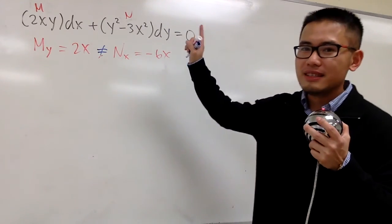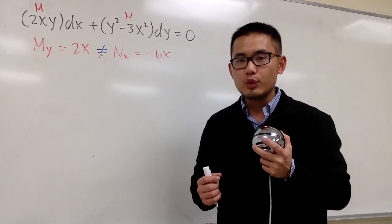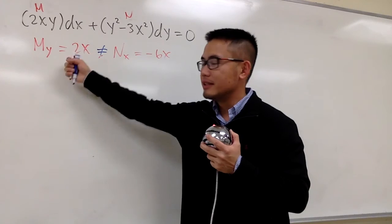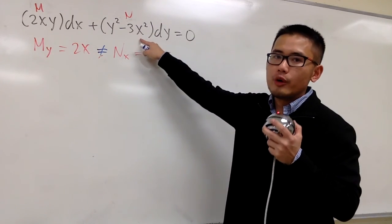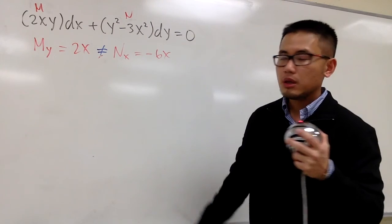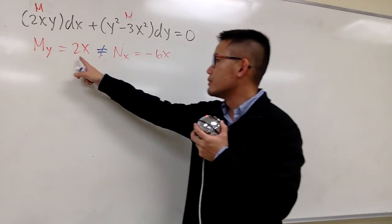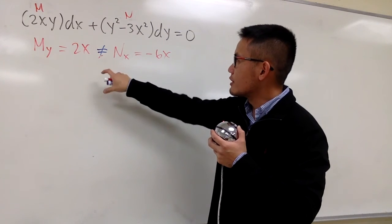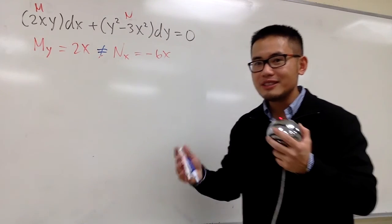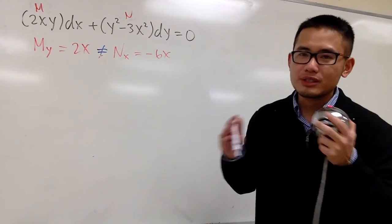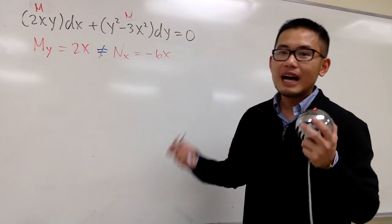We can work with this because this is almost exact. I know I will have a special integrating factor, and I will have to do either this minus that or that minus this. At the end, I will divide by either the original M or the original N. If I divide the result by N — which is y squared minus 3x squared — I cannot cancel everything out and end up with an expression in just x or just y. So I want to divide it by M.